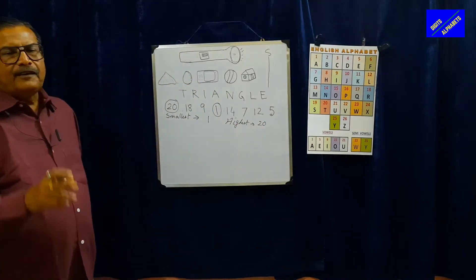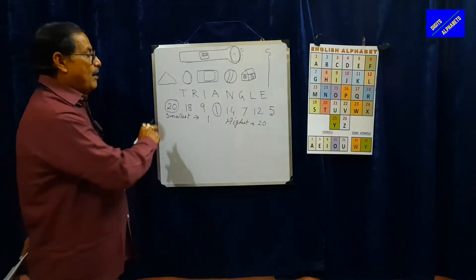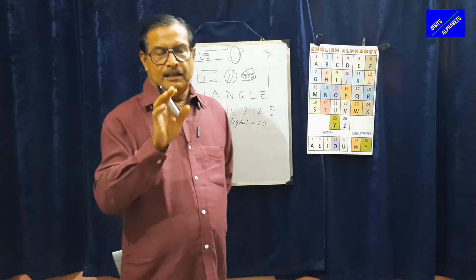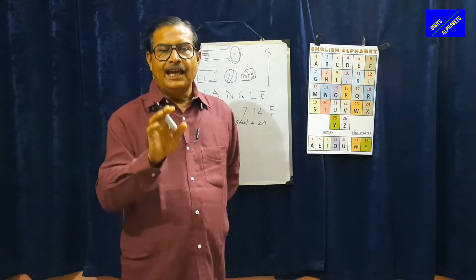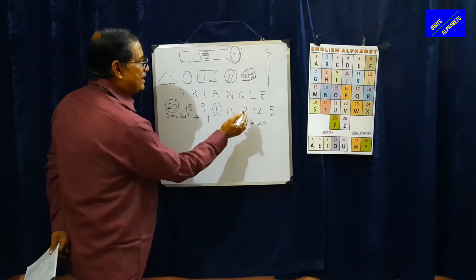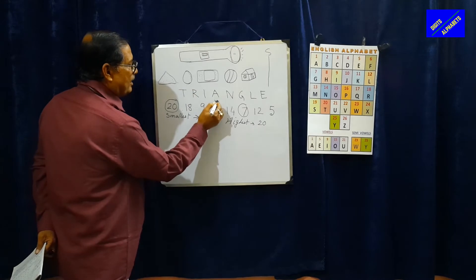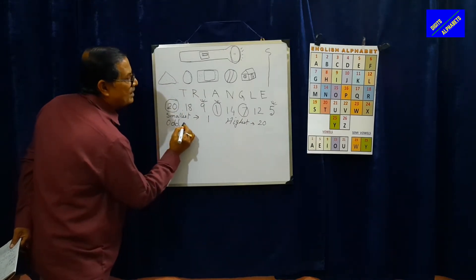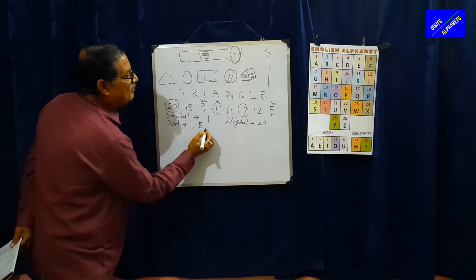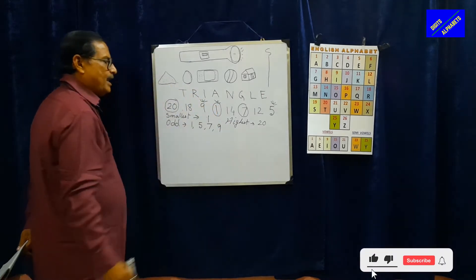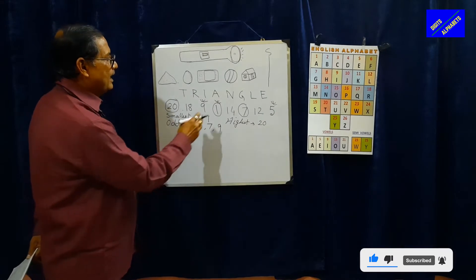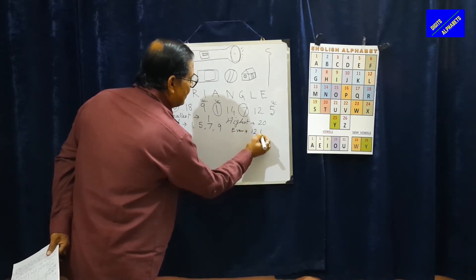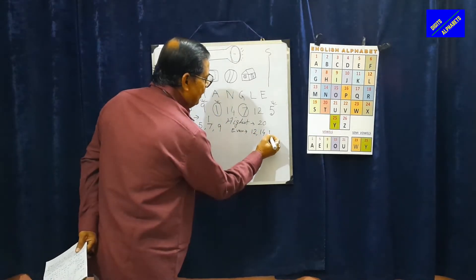Now if I tell you, define the odd numbers among this group of numbers. You know an odd number — if you divide it by 2 and have any remainder, it is an odd number. So the odd numbers are: 1, 5, 7, and 9. The even numbers are the rest: 12, 14, 18, and 20.